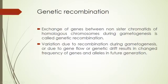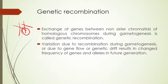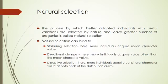Next is genetic recombination. Genetic recombination means the exchange of genes between non-sister chromatids of homologous chromosomes during gametogenesis. This is essentially crossing over, where non-sister chromatids exchange segments. The variation due to recombination during gametogenesis, or due to gene flow or genetic drift, results in changed frequency of genes and alleles in future generations.